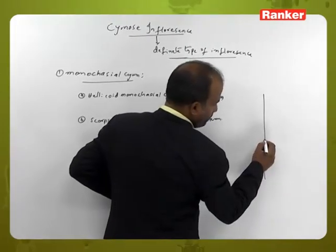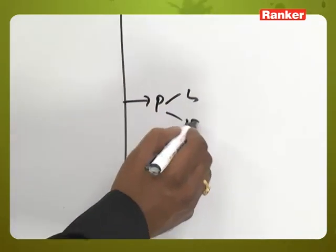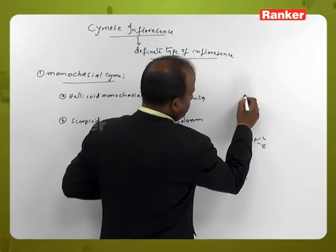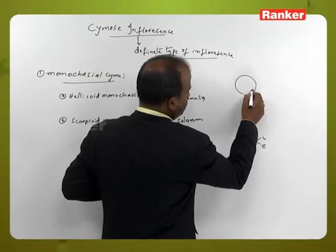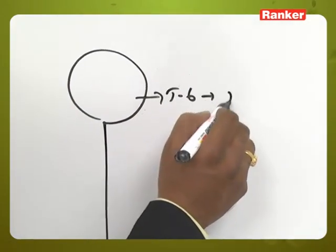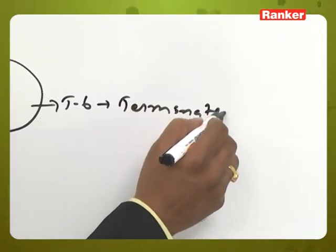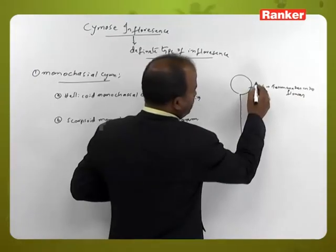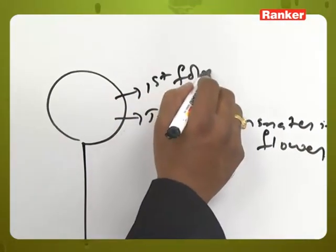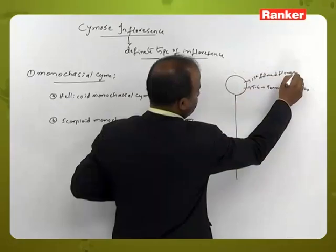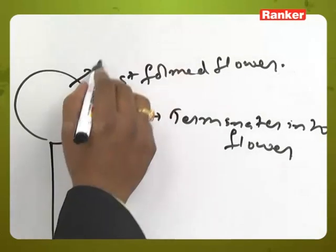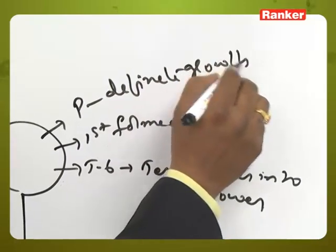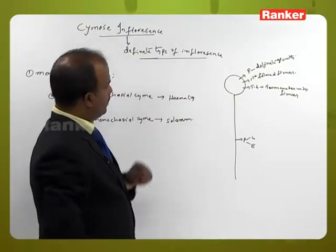The peduncle is long elongated. The terminal bud of the peduncle terminates into flower — that is the first formed flower. Therefore the peduncle shows definite growth.